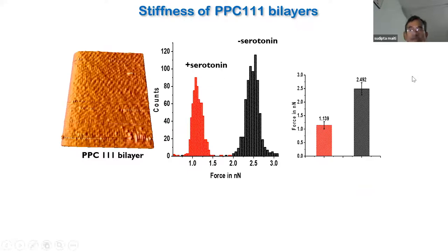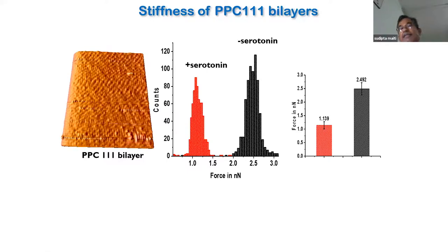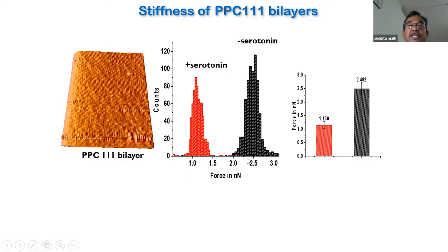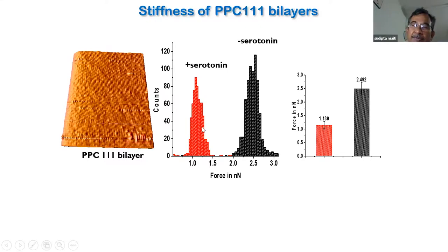Here is a lipid bilayer — I call this PPC 1:1:1, which is POPC:POPG:cholesterol at 1:1:1 molar ratio. That's a standard bilayer with a negative charge. If you do AFM imaging and then press in to measure the force, without serotonin you see a force peaked around 2.5 nanonewtons — there's a distribution because we measured in many many places. With serotonin this force goes down drastically — not 10 or 20 percent — it goes from 2.5 to about 1.1 to 1.2 nanonewtons, more than a factor of two.